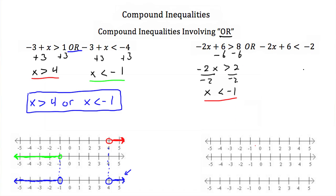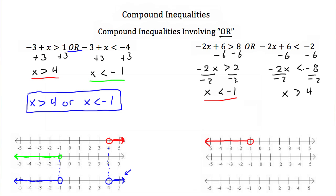To graph that, we go to negative 1 on the number line, put an open circle because this is a less than sign, not less than or equal to, and shade everything to the left on the number line. For the second set, negative 2x plus 6 has to be less than negative 2. We subtract 6 from both sides and get negative 2x has to be less than negative 8. Divide both sides by negative 2, and we get x is greater than positive 4. I switched my inequality signs again because we divided by a negative number.